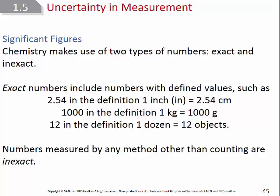Time can be defined or measured. Defined time units are exact: 60 seconds in one minute, 60 minutes in one hour. But a day is defined by how long it takes Earth to rotate on its axis — about 24 hours — and that's a measured value, not a defined one. So 24 hours in a day is inexact, while 60 seconds in a minute is exact.